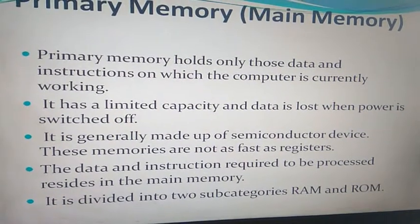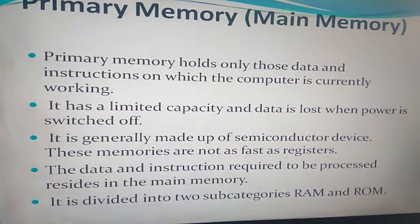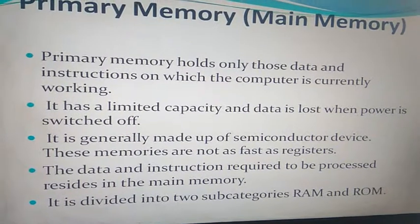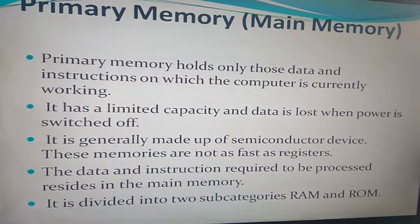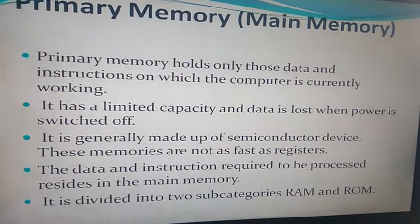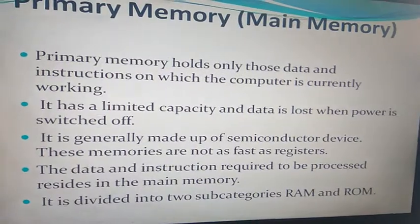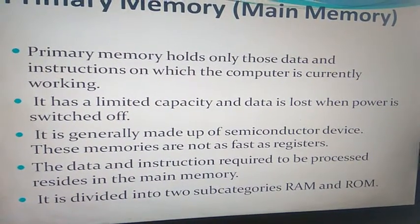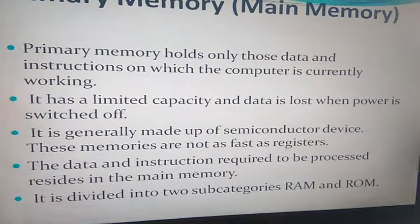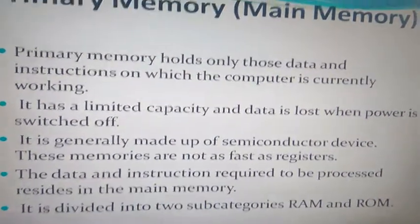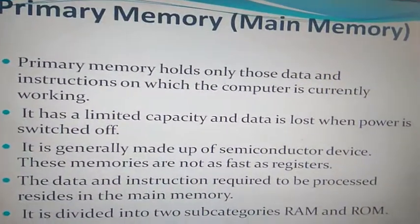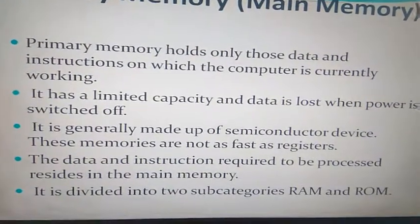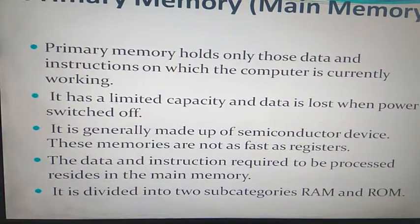Moving to primary memory, which is also known as main memory: primary memory holds only those data and instructions on which the computer is currently working. It has a limited capacity and data is lost when the power is switched off. Primary memory includes two types: one is RAM and the other is ROM.